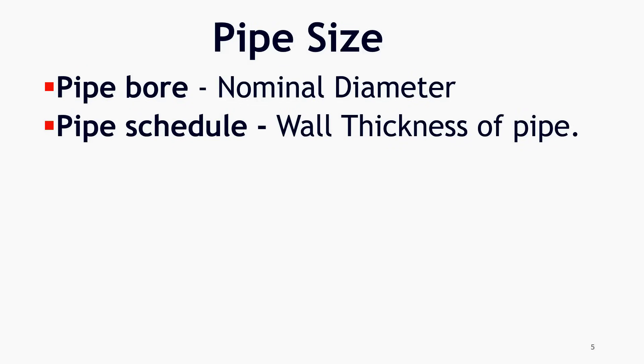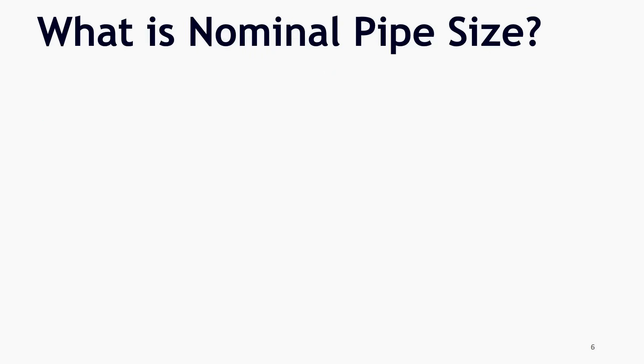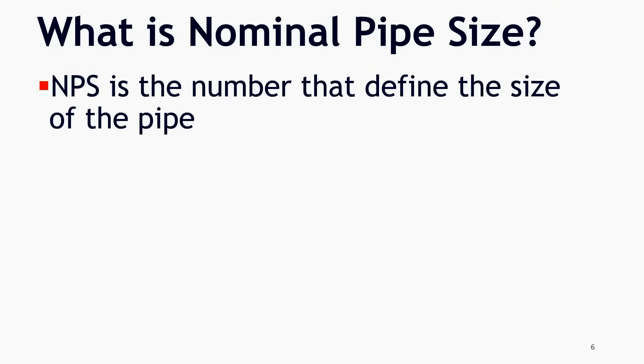NPS, NB and DN. These are the three terms that are used to mention pipe diameter. Let's check each of them. What is nominal pipe size? Nominal pipe size or NPS is the number that defines the size of the pipe.